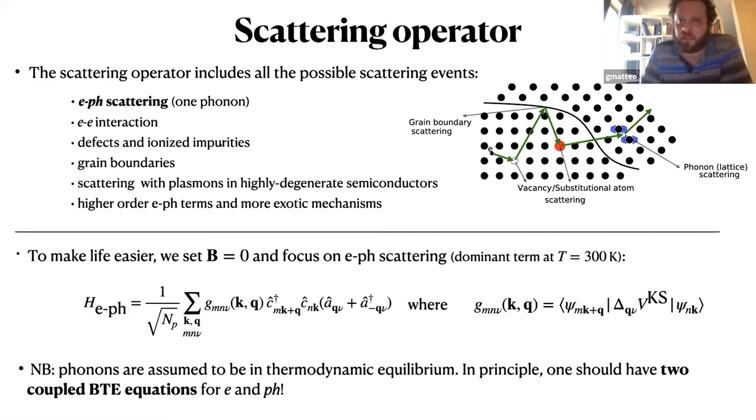We focus on zero magnetic field settings, and we'll include electron-phonon scattering with one phonon, because it's well known that this is the dominant term at room temperature. Also, the other terms sum up, they have some temperature dependence, but this is something that we can deal with, and it's a significant term. This is the standard electron-phonon Hamiltonian with the electron-phonon matrix elements that can be computed with the Kohn-Sham DFPT.